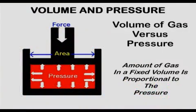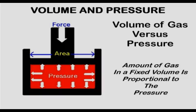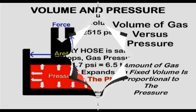Understanding the relationship between gas pressure and volume will help explain why a high gas surge blasts out of a MIG gun when starting, and a way to correct it. The amount of gas contained in a fixed volume is proportional to the pressure — if the absolute pressure doubles, the volume of gas doubles.